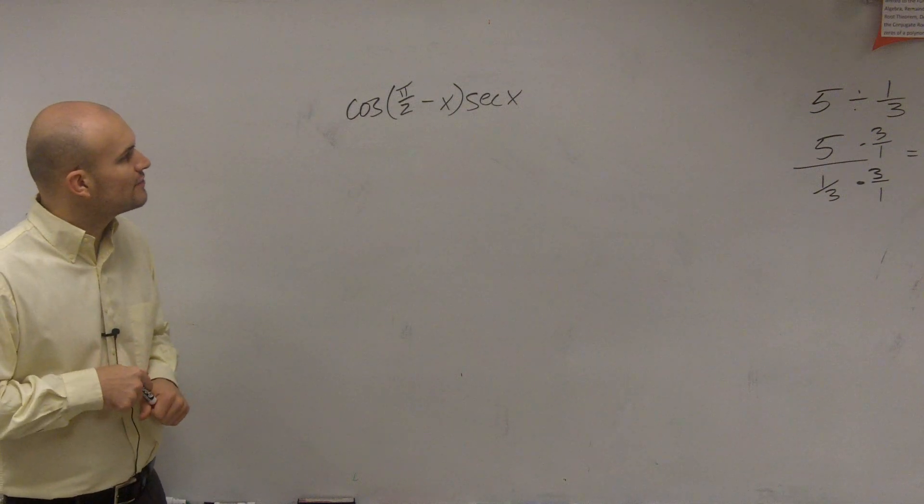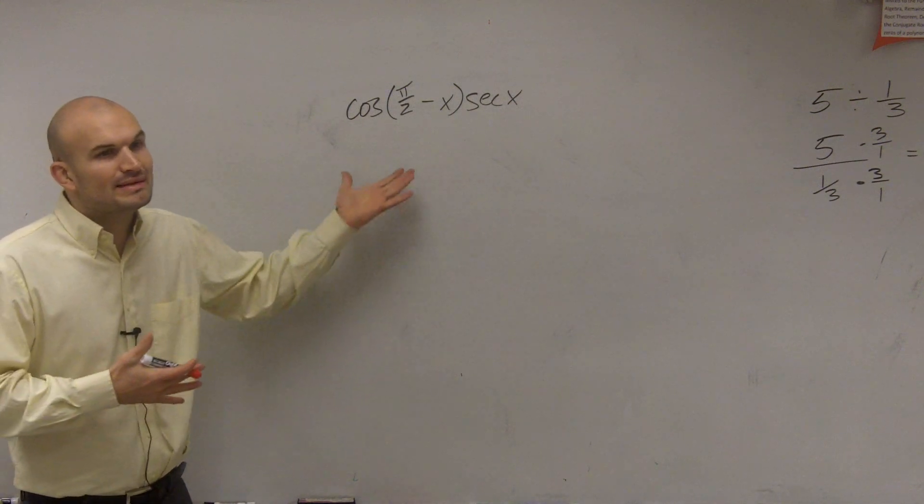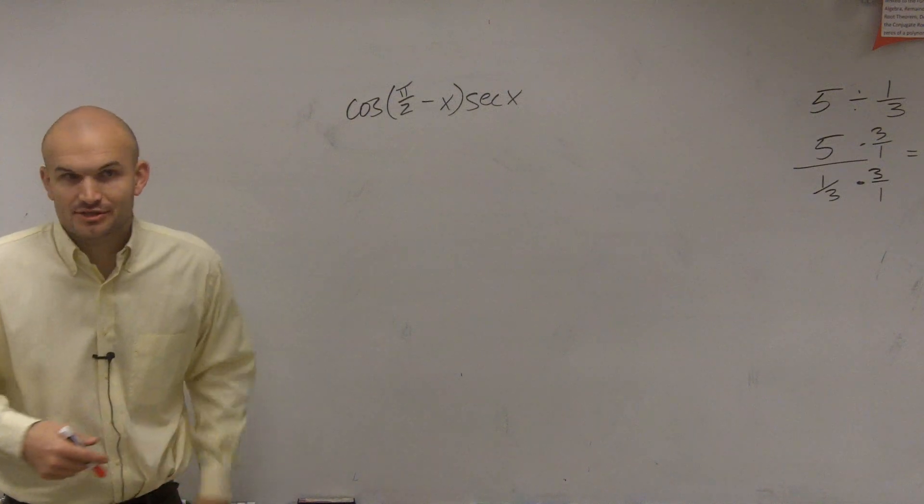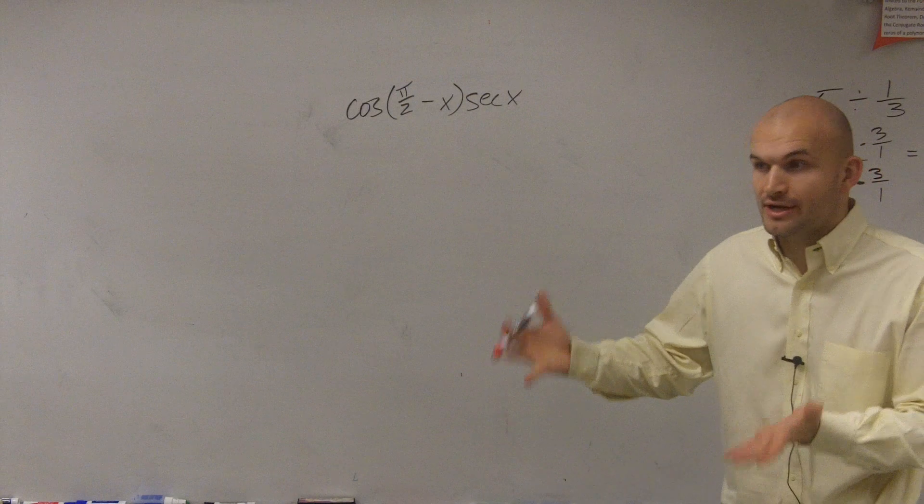So what we're going to look at here today is we have cosine of π/2 minus x. Ladies and gentlemen, when you see that, automatically that's going to tell you I need to know my cofunction identities. This is working at your cofunction identities.